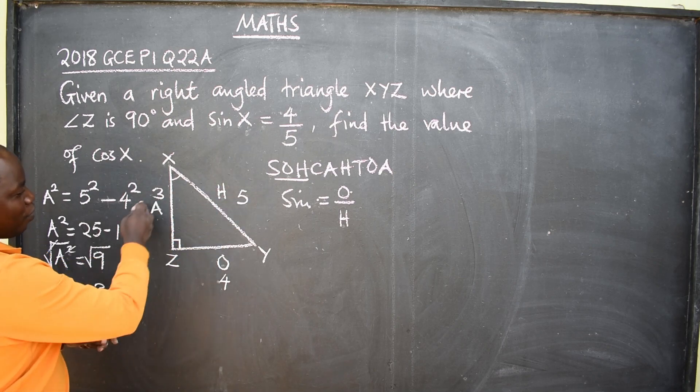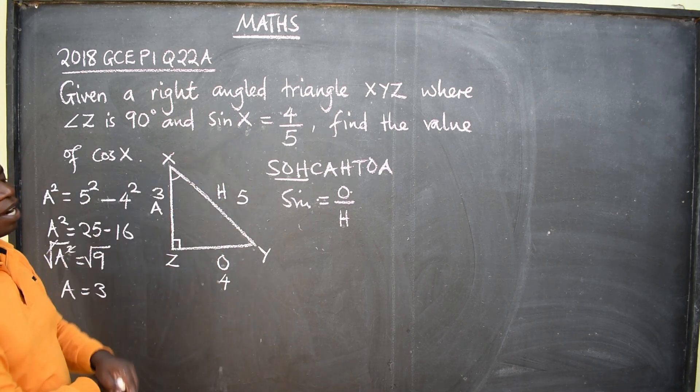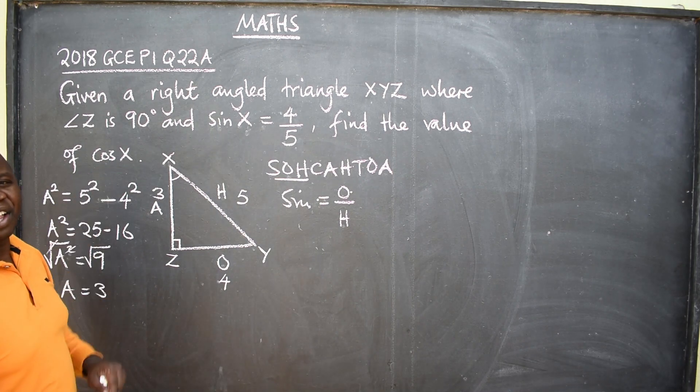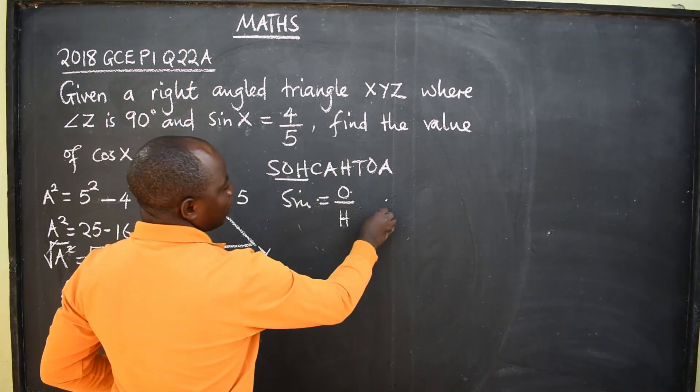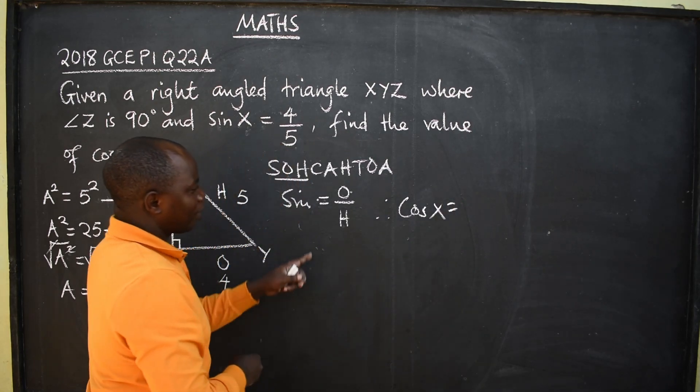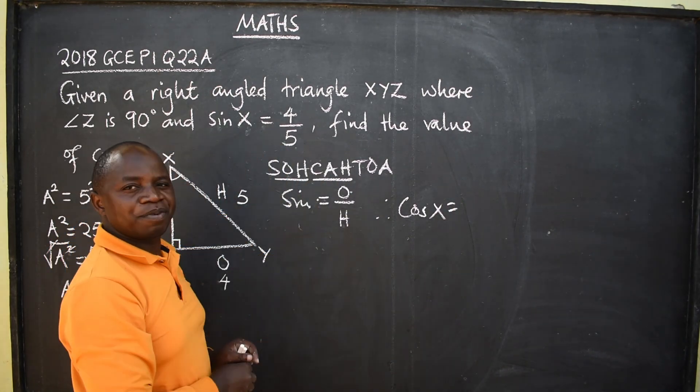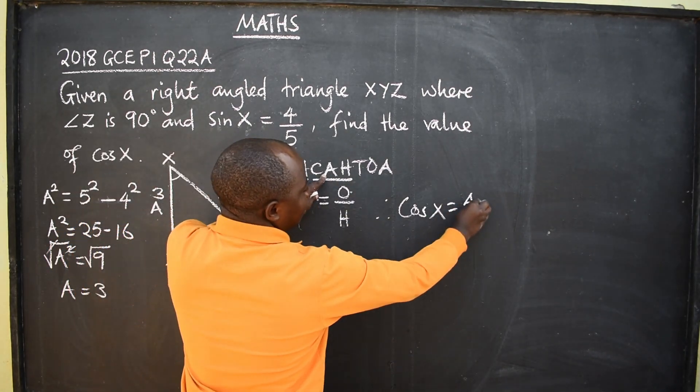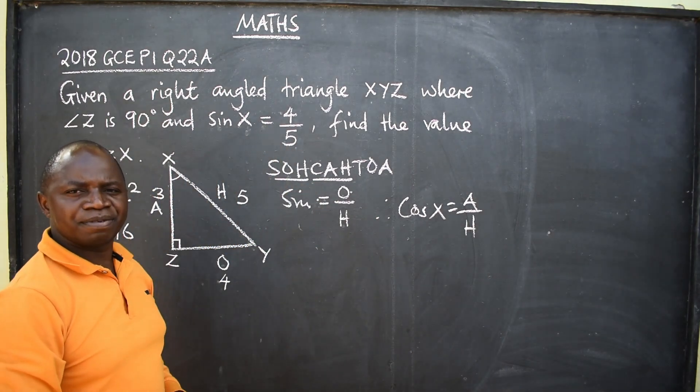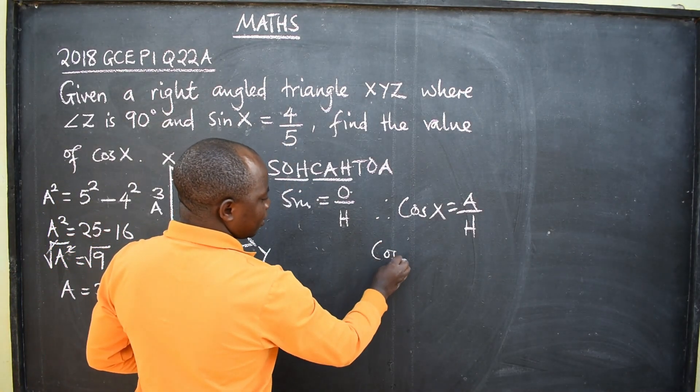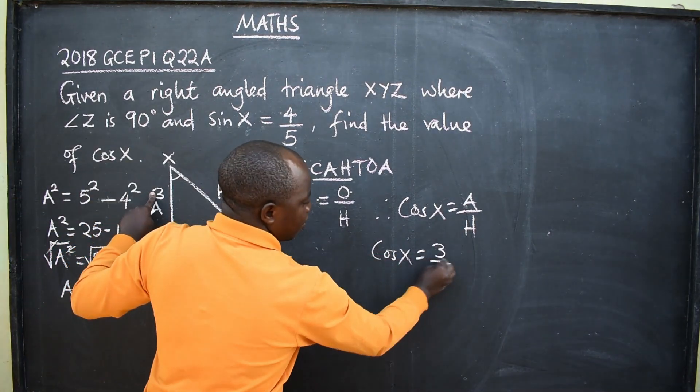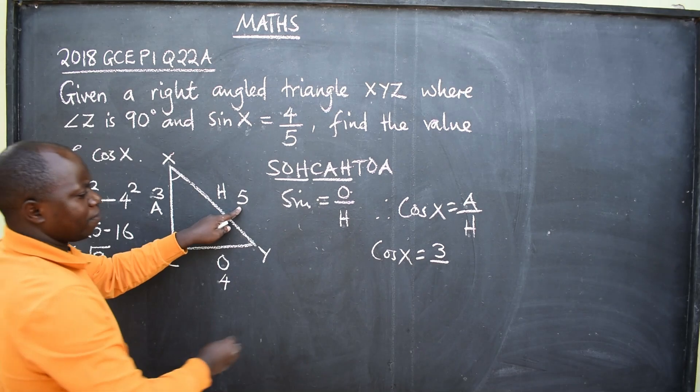Now that we have all the three sides, we go back to the question. Find the value of cos x. So we are now going to say cos x will be equal to, remember, cos is coming from here. Cos is adjacent over hypotenuse. Cos, substitute, cos x will be equal to, what is our A? 3. What is our H? 5.